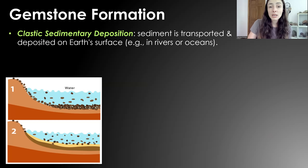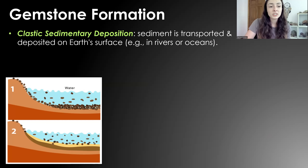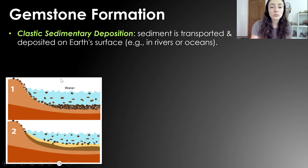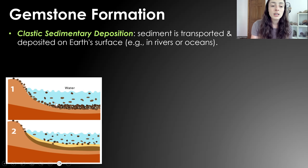In terms of sedimentary rock and mineral formation, we have clastic sedimentary deposits that form when sediment is transported and deposited on earth's surface in rivers or ocean basins. Loose sediment is transported to a basin and deposited on the seafloor or lake floor, and then it gets compacted and buried over time.